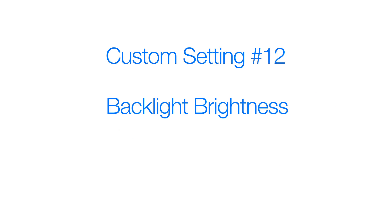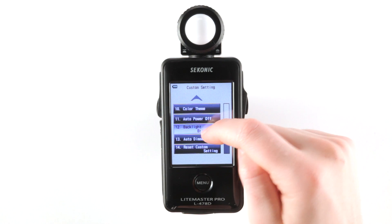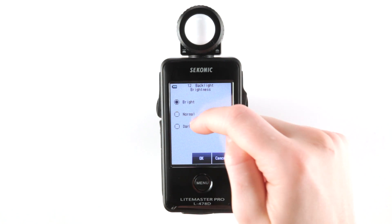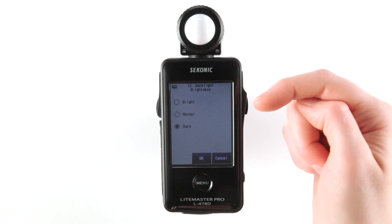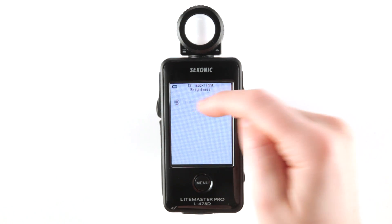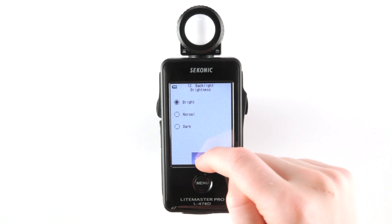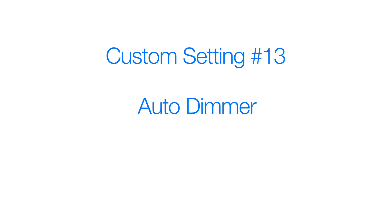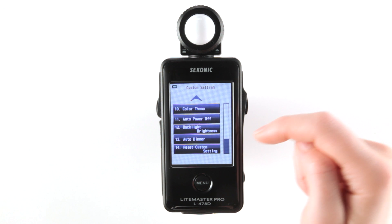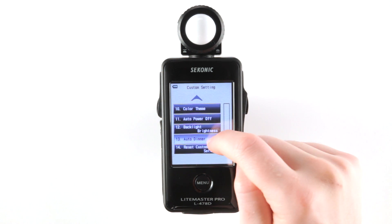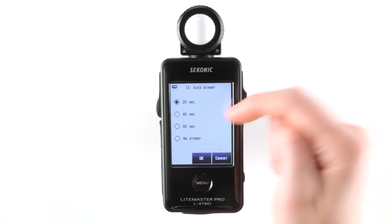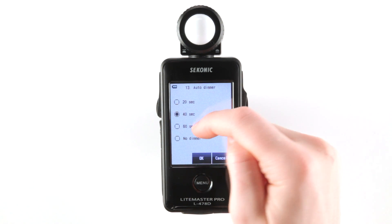Custom setting 12: backlight brightness. Depending on ambient lighting conditions and to save battery power, you can select the backlight brightness level. Custom setting 13: auto dimmer. To conserve battery power, you can select the time the meter waits before it dims the screen.